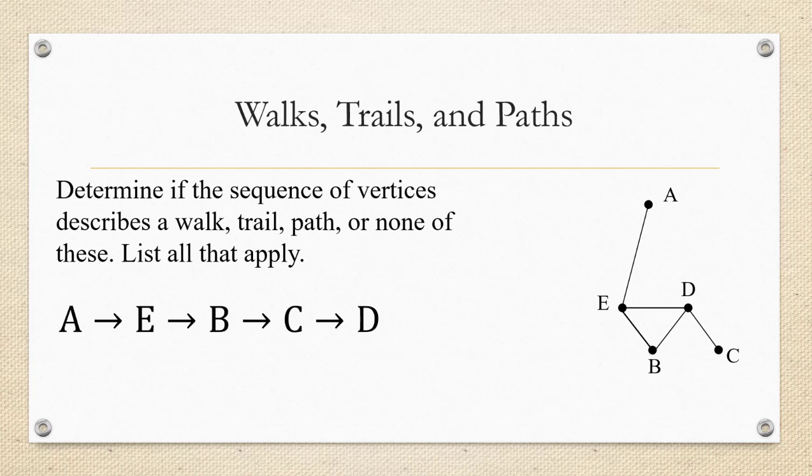First, let's look at A to E to B to C to D. Remember, the first thing you want to confirm is that it's even a walk. Do all of the edges that are listed here actually exist on the graph? A to E is the first one. That's there. E to B, and then B to C. Nope. So we can see that this, in fact, because there's no edge between B and C is not a walk, which means it can't be a trail or a path either. So it's none of these.